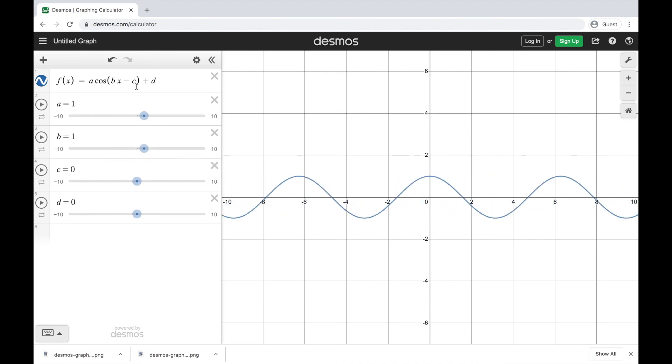Adding or subtracting a number from x, so if I do cosine of (x minus c), is going to cause this horizontal shift. A positive number will shift to the right, whereas a negative number will shift to the left.